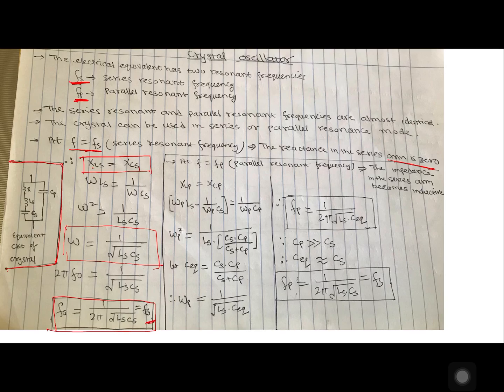At parallel resonant frequency, this arm, the series arm over here becomes inductive. So let's apply the series resonant condition, reactance in this arm is equal to this. So over here you have two terms, inductive and capacitive. Solve this to get omega p and then convert it into linear frequency like this.